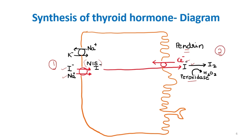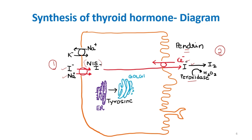The third step is thyroglobulin synthesis. Thyroglobulins are produced from tyrosine in the endoplasmic reticulum, and with the help of the Golgi bodies, thyroglobulin is formed and secreted into the follicular space.